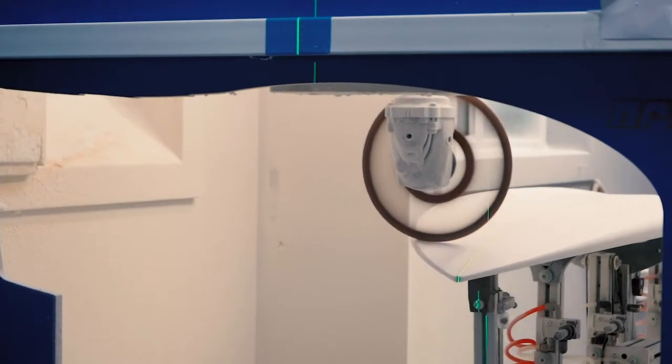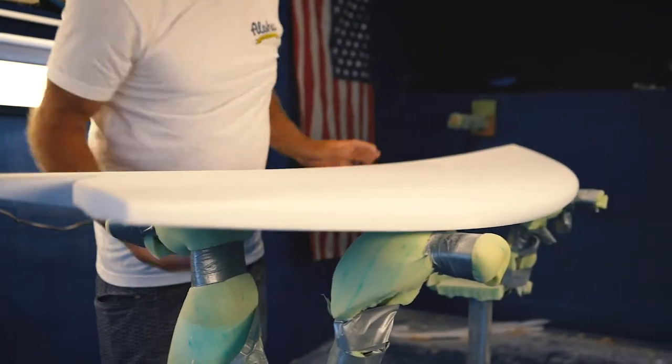Cut a deep wing swallow. We put a nice channel through the back, tube keel fins, and did a little different rail.